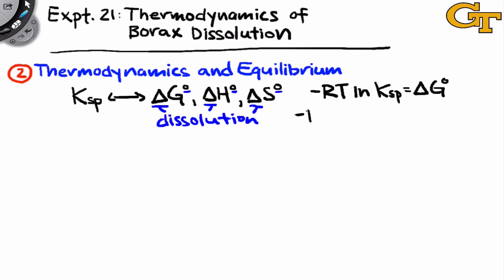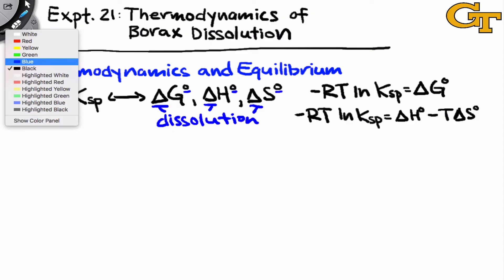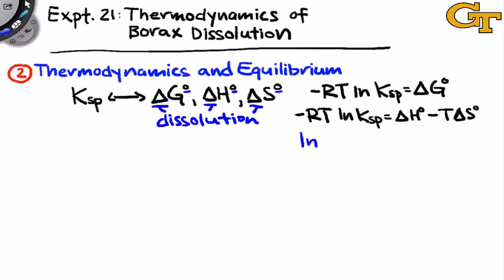We can expand the right hand side using the definition of delta G as delta H minus T delta S, both their standard values.